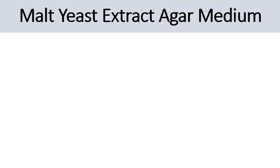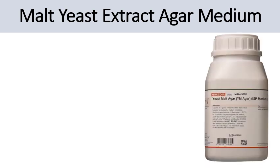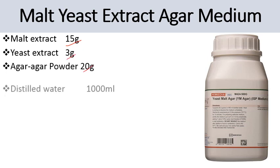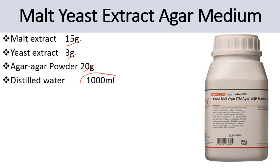The next medium is malt yeast extract agar medium. Its components are malt extract 15 grams, yeast extract 3 grams, agar agar powder 20 grams, and distilled water 1000 ml. The procedure for its preparation is the same as described for MEA medium.